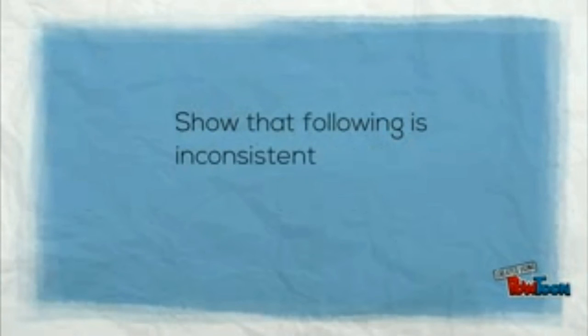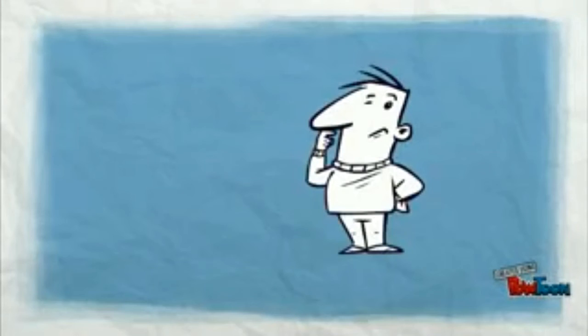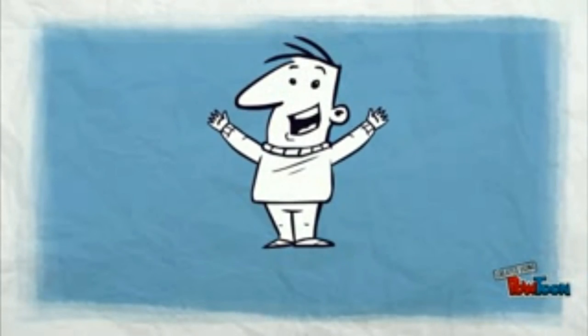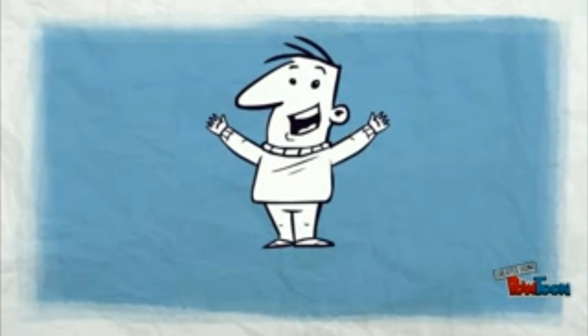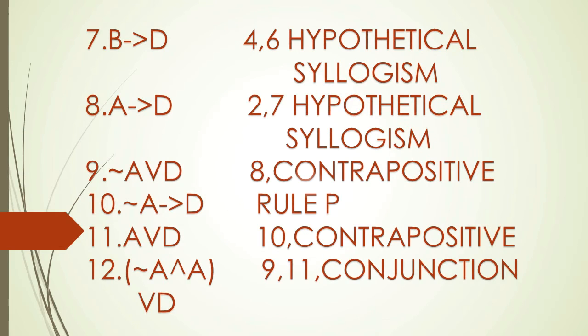Now let's move to the class-level examples. Show that A or B is the conclusion of the given premises. Inconsistent means getting a false conclusion. I am not getting what to do. No problem, let's go step by step.